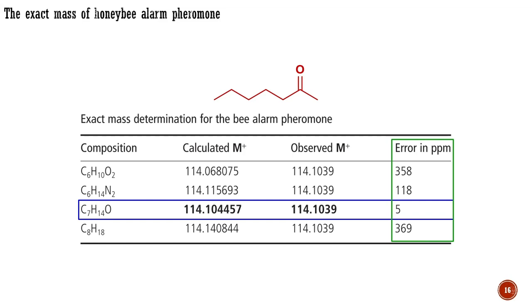You may not think the fit is very good when you look at the two numbers, but notice the difference in the error expressed as parts per million — one answer stands out from the rest. Note that even two places of decimals would be enough to distinguish these four compositions. In the rest of the course, whenever I state that a molecule has a certain atomic composition, you can assume that it has been determined by high-resolution mass spectrometry on the molecular ion.